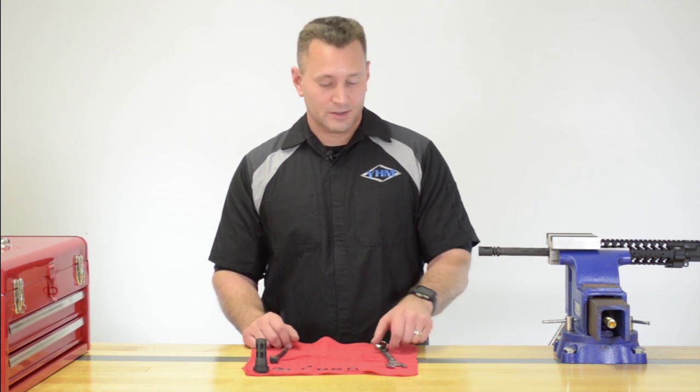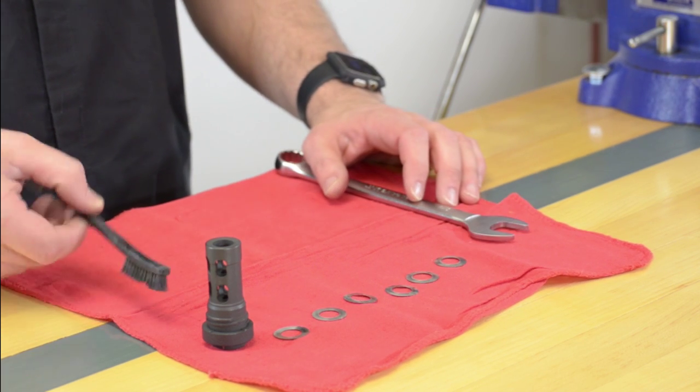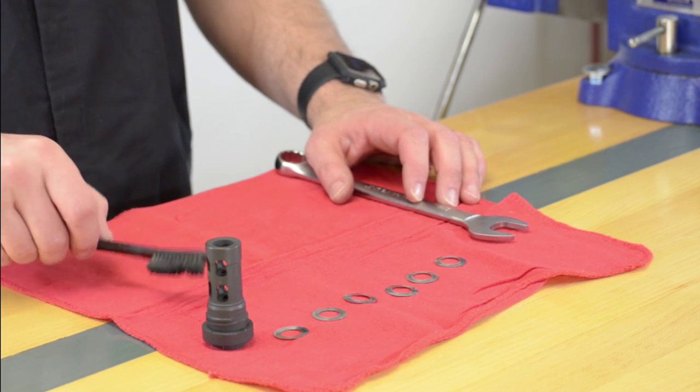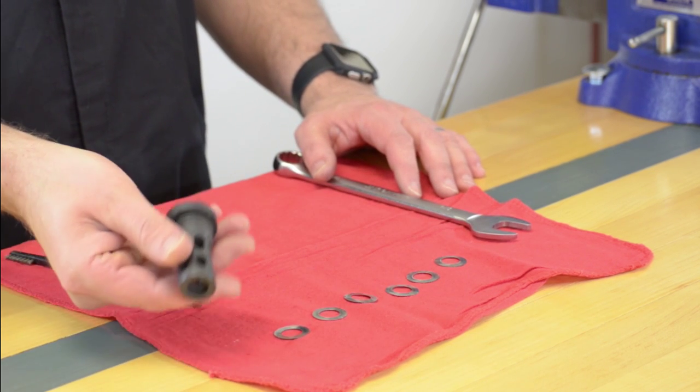This is what you're going to need right here: three-quarter inch wrench, nylon brush, set of shims, and your QD muzzle brake.